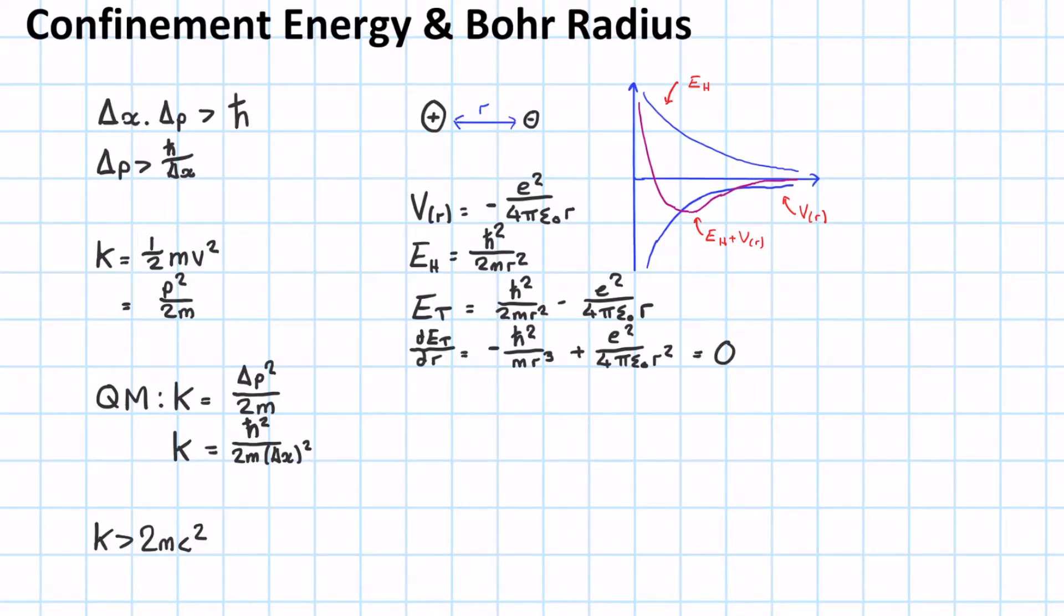Now, we can rearrange this and solve for R. And hopefully, this will pop out as the Bohr radius. E squared upon 4 pi E naught R squared equals h bar squared upon M R cubed. And with one more line of algebra, we can get an equation out for R: R equals 4 pi E naught h bar squared upon M E squared.